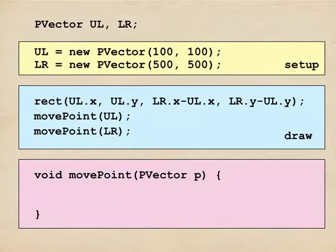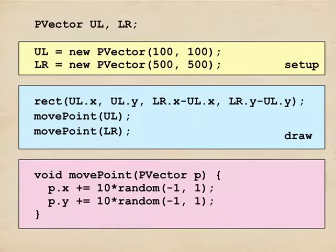So what does move point look like? Move point returns void. In other words, it's a routine that doesn't return anything. Its name is move point because that's the name I made up for it. And the argument it takes is a p-vector. It takes just one argument. Inside of move point, I'll just move the p-vector around. To the x value, I'll add a random number between minus 10 and 10. And I'll do the same thing for the y value. So this little skeleton of a program will draw lots and lots of rectangles, each one a little different than the one before.